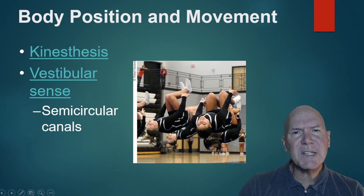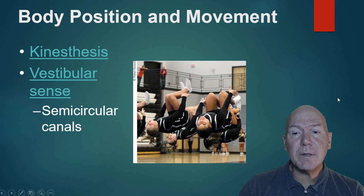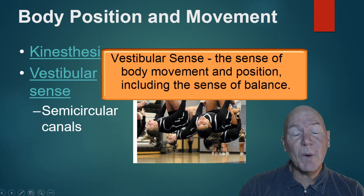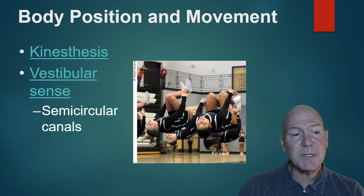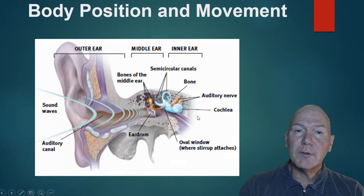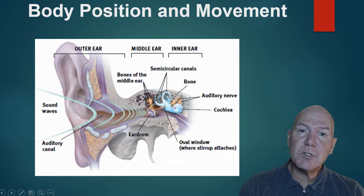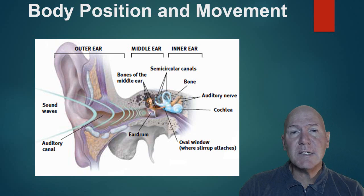Body position and movement involve the kinesthetic and vestibular senses. Kinesthesis is the sense of knowing where your body is in space — gymnasts have excellent kinesthetic intelligence. The vestibular sense tells you where your head is in space. It works via the semicircular canals and vestibular sacs in the ear — liquid moves and your brain reads that movement. This is why we get motion sickness: the movements inside your ear don't match what you're seeing, causing dizziness.